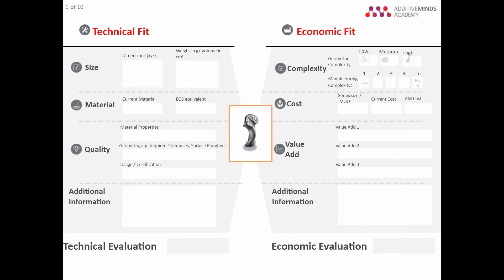The scorecard is an overview of all the central criteria we discussed. For this joystick, we start to assess the suitability of the application for additive manufacturing by adding the technical specifications — for example, the dimensions, weight, volume, conventional material, and what equivalents exist, as well as quality requirements.